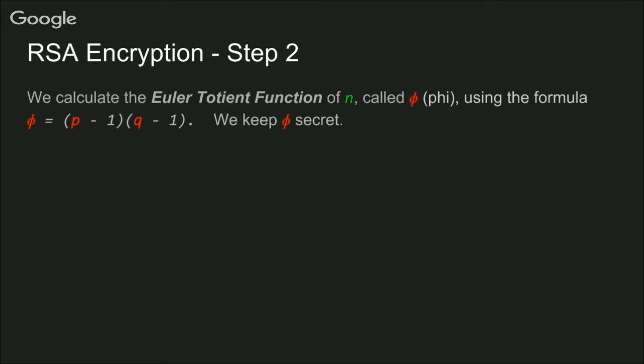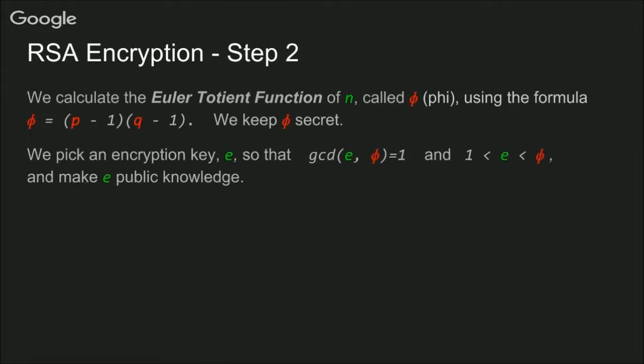Then we calculate the Euler-Totient function of N, which is called phi, using the formula φ = (P - 1)(Q - 1), and we'll also keep phi a secret. We then pick an encryption key, E, so that the greatest common divisor of E and φ is 1, and that E is between 1 and φ.